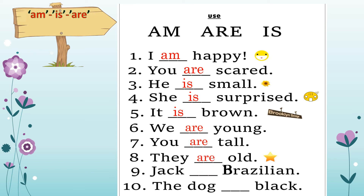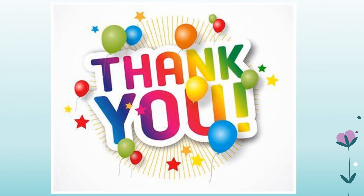What's the next one? Jack dash Brazilian — Jack is Brazilian, because Jack is a singular noun. The dog dash black — dog is only one, so with singular nouns and pronouns we use is. That's all for today, students. Let's meet in class to learn more. Bye-bye.